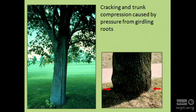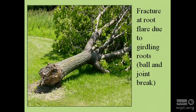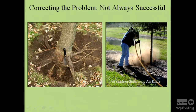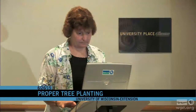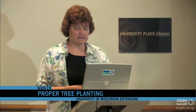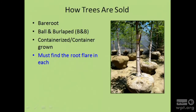Other things you might see include cracking—instead of going out, the trunk is going in from the pressure of girdling roots. A ball-and-joint effect can also start when girdling roots compress the trunk. The air knife in action: you can see someone else also tried digging out with a trowel as a home remedy. From the soil line—the light-colored area on the bark—you can see how deep that tree was planted. You can barely see where the root flare even is on that tree.